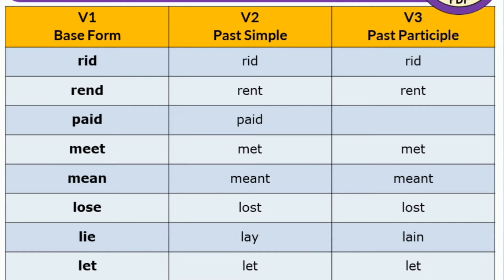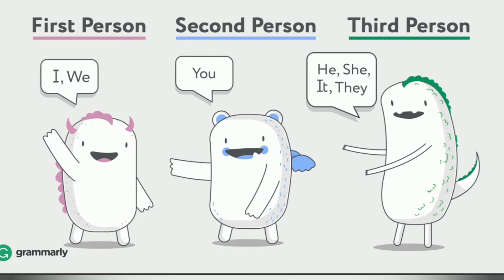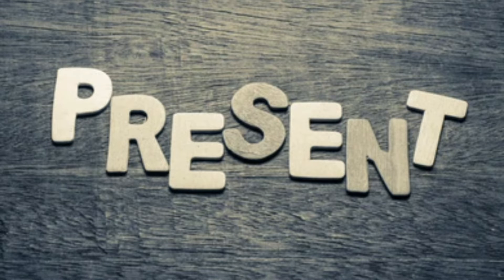In the previous class I explained verb 1, verb 2, and verb 3. Verb 1 is the base or present form of the verb. Verb 2 is the past form, and verb 3 is the past participle form. We also learned first person (I, we), second person (you), and third person (he, she, it, they).